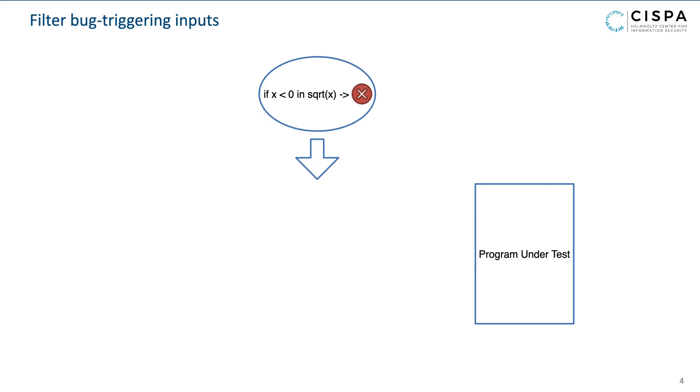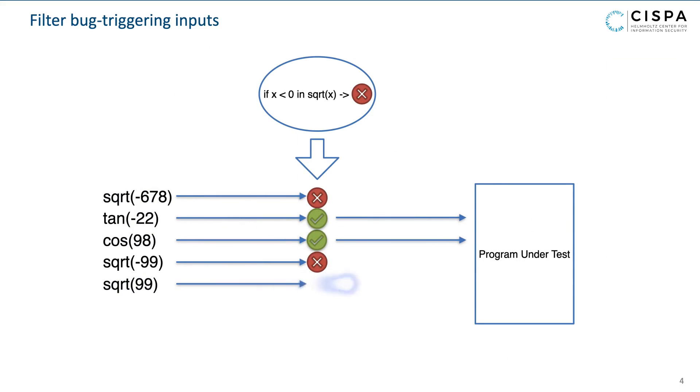The model can be used to classify whether an input triggers the bug or not. You can then deploy it as a filter in front of your program to guard against bug-triggering inputs until you had the time to actually fix the bug. In our experiments, Alhazen classified 92% of all inputs correctly.